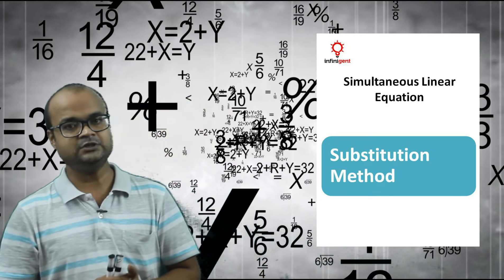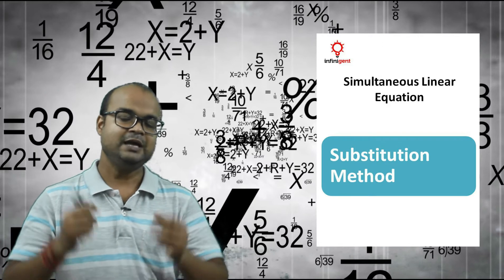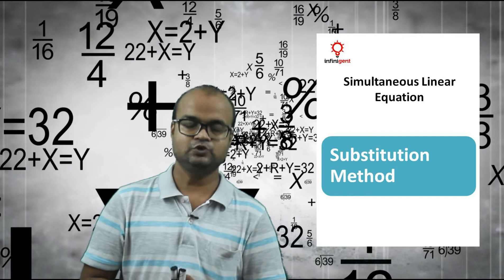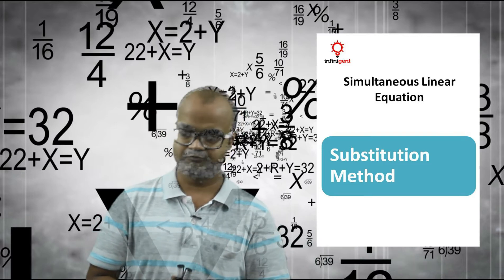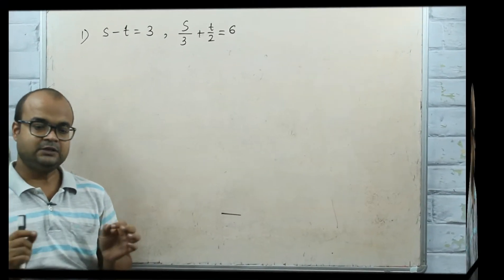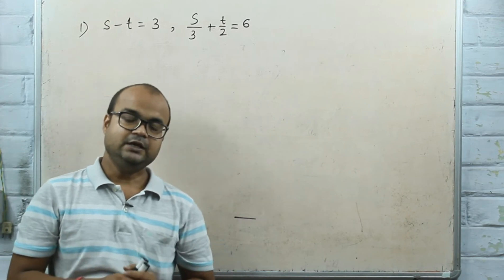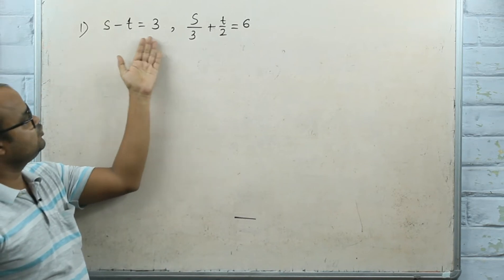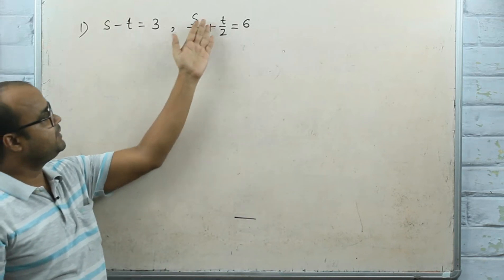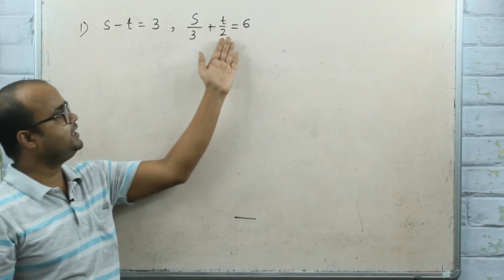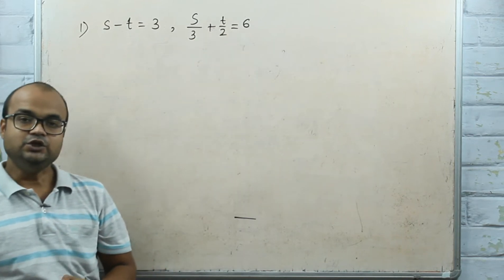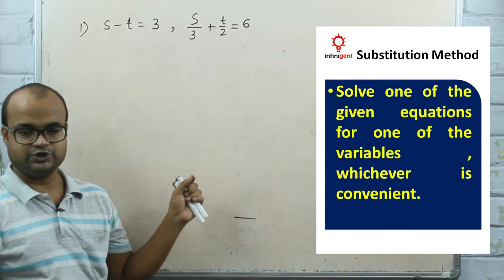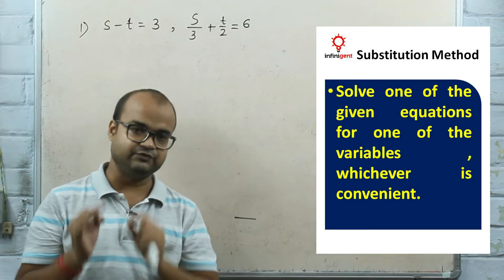We begin with solving the problem and explain the algorithm. Substitution method: you have two equations, and you have to solve one of the given equations for one of the variables, whichever is convenient.